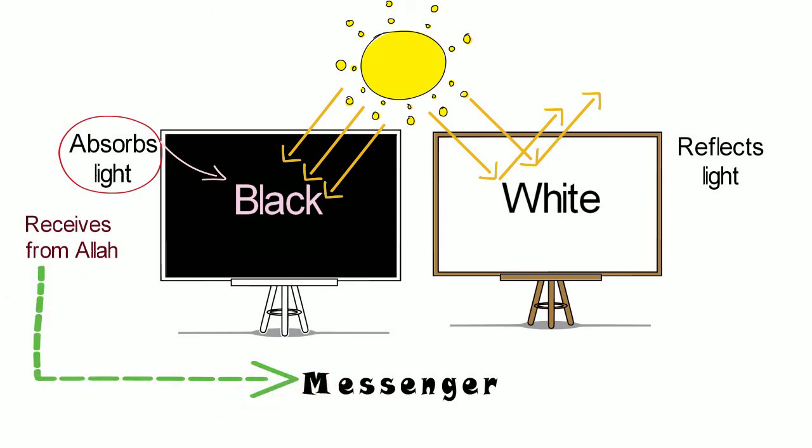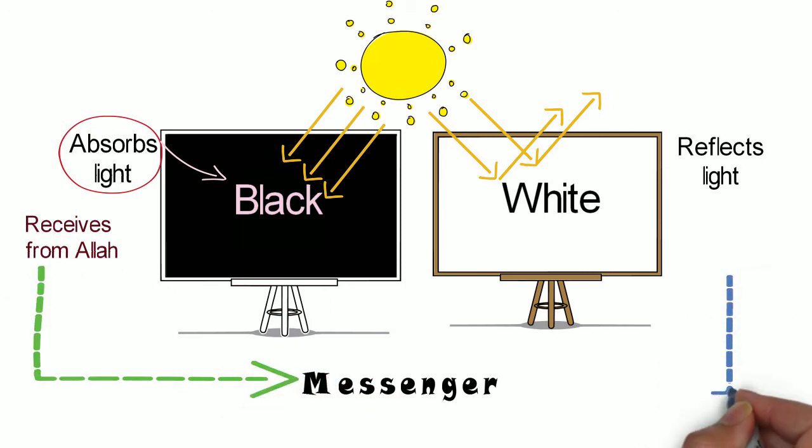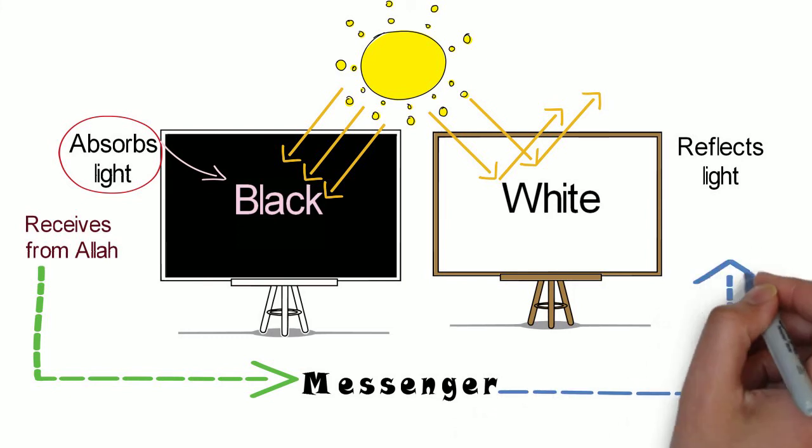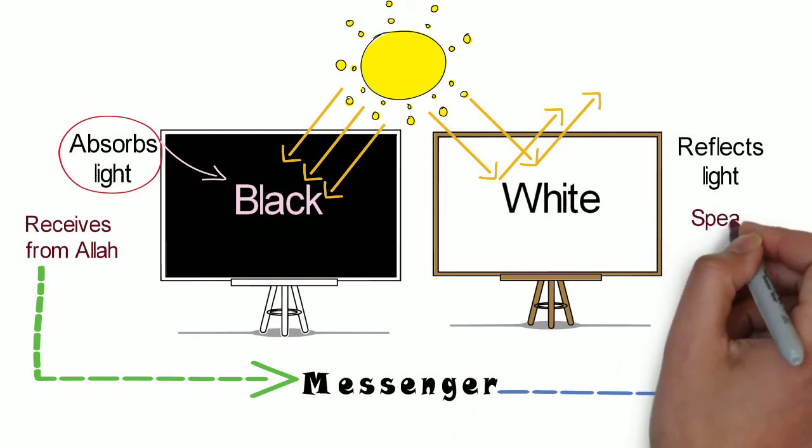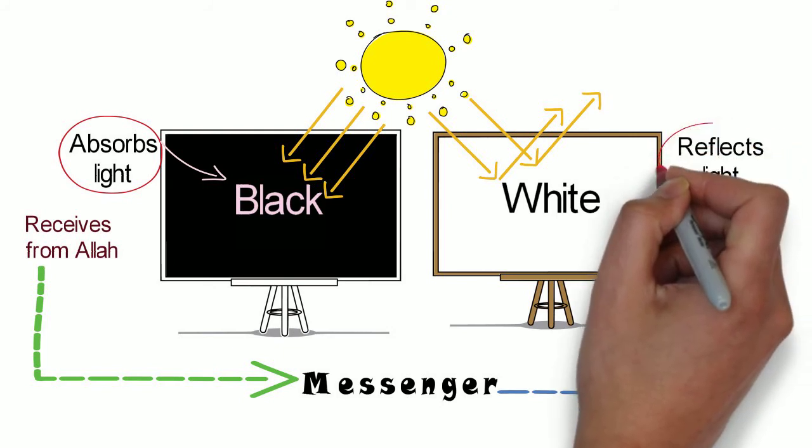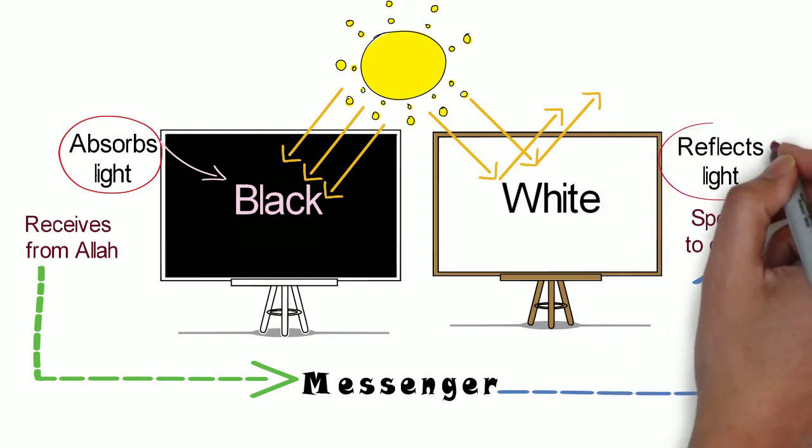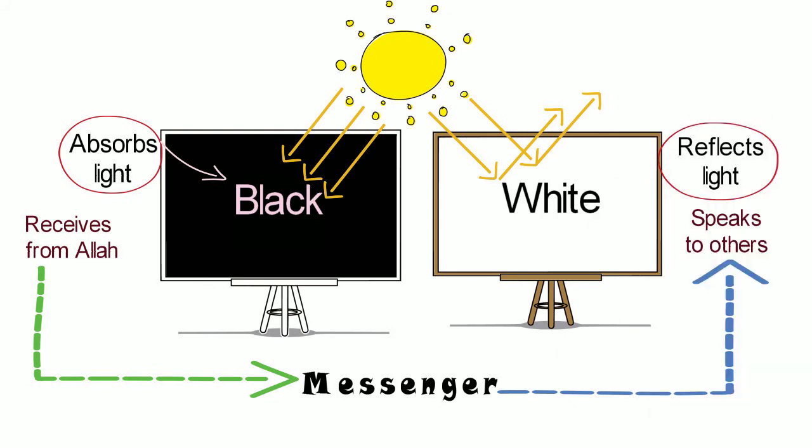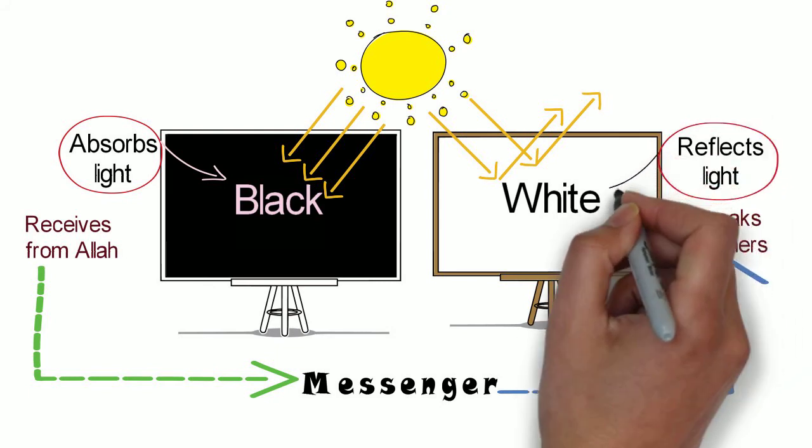Whatever he receives, he is completely, totally absorbed. And when he speaks to the others, he reflects the entire light without being dishonest or stingy about it. So that reflection makes it white.